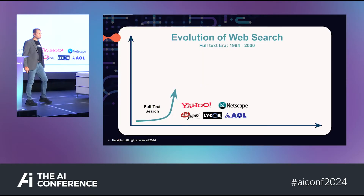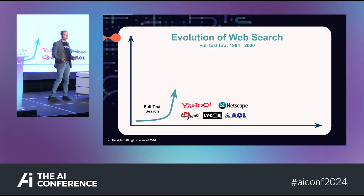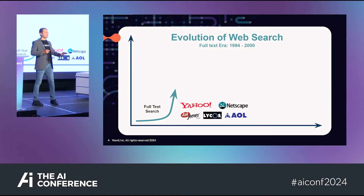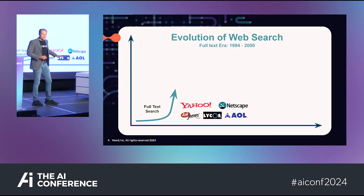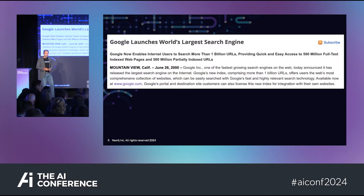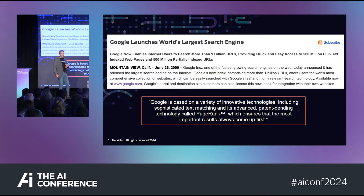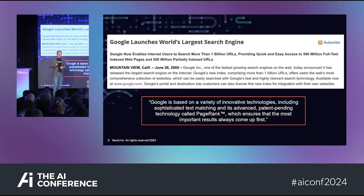If you go back to the mid-'90s, you had somewhere around 30 to 40 companies all doing this really impressive, very useful, new thing — which is indexing the entire World Wide Web and providing a full-text search interface on top of it. At the time, it looked like this was just going exponential until Google came around in 2000. Not only did they launch the world's largest search engine, but they brought a new solution to bear: PageRank, which happens to be a graph algorithm. That ensures the most important results always come up first, in a world where it was very easy for people to game full-text search.